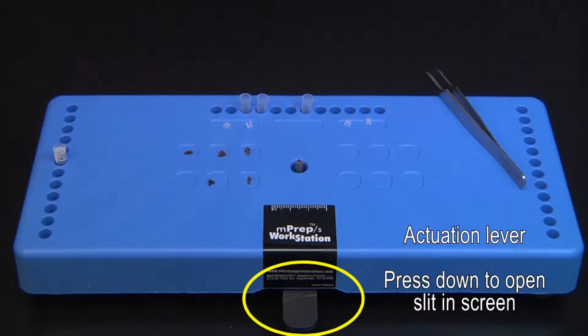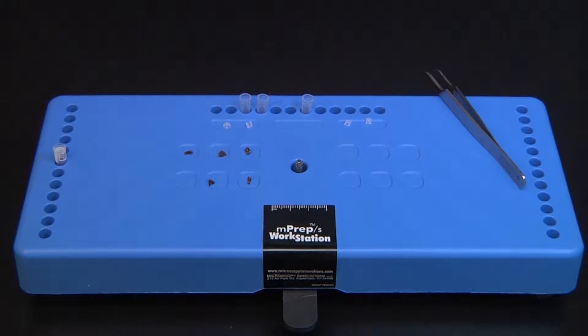At the front of the workstation is the actuation lever. This lever opens a slit in the MPREP-S screen to pinch mount and orient specimens.